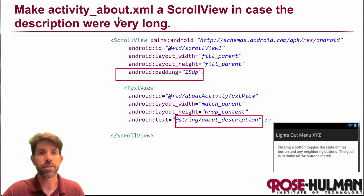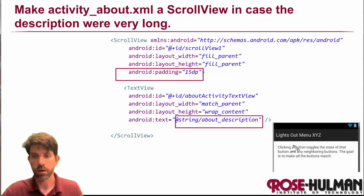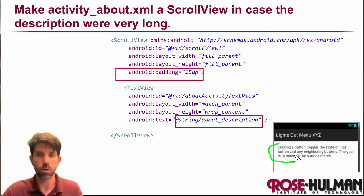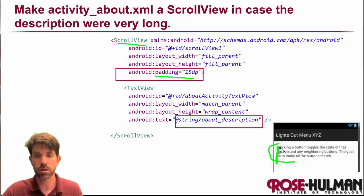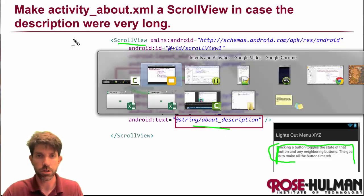For the XML layout, we want to make this a scroll view — especially with dialogs like this that might have a lot of text which could go off the window. So we'll make the scroll view the parent, give it a little padding for spacing, and then set a text view inside it with the about description text.